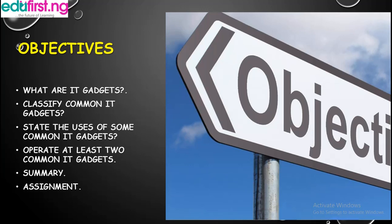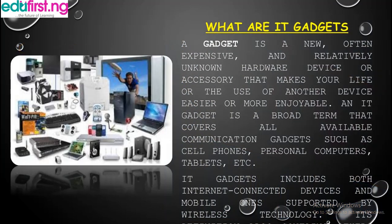The objectives of this class are: What are IT gadgets? Classify common IT gadgets. State the uses of some common IT gadgets. Operate at least two common IT gadgets. We have a summary and an assignment for everyone.